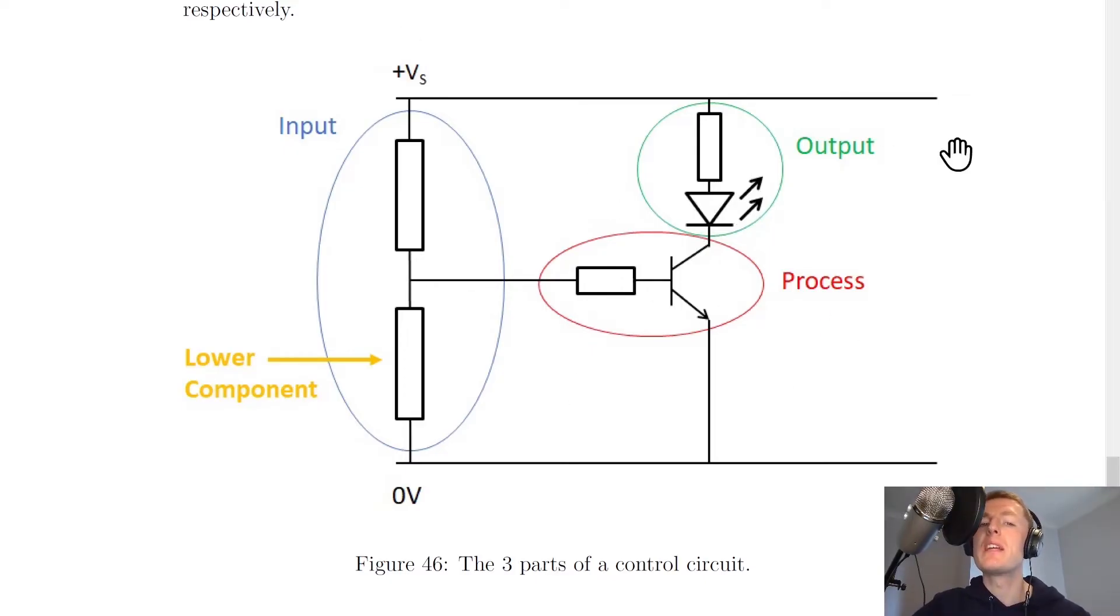What we're doing here is combining things that we've looked at already, such as potential divider circuits. Within the input part we'll often have a thermistor or an LDR, so we can use our rules for thermistors and LDRs that we've seen previously. We can also use our knowledge of transistors such as NPN or MOSFET transistors for the processing part, and then for the output we can use our knowledge of different circuit components that can switch on or off, such as LEDs, bulbs, buzzers, and motors.